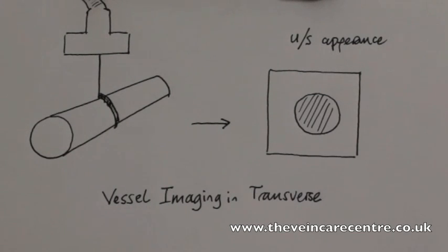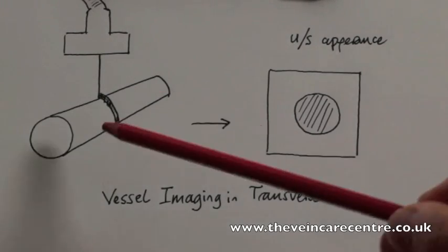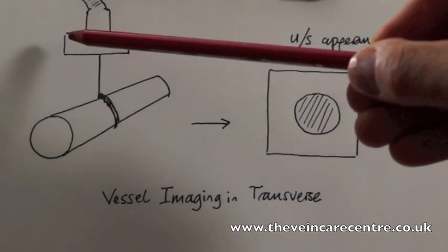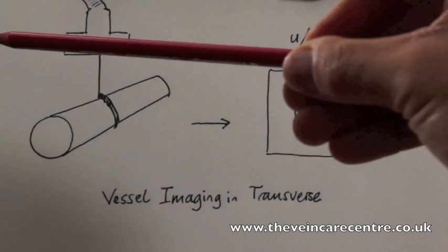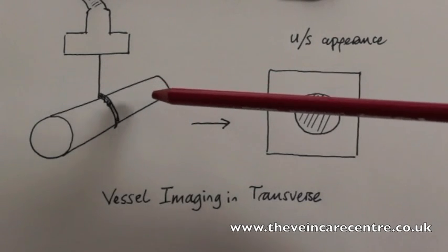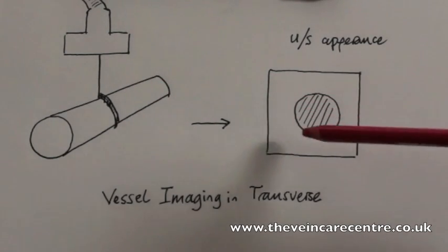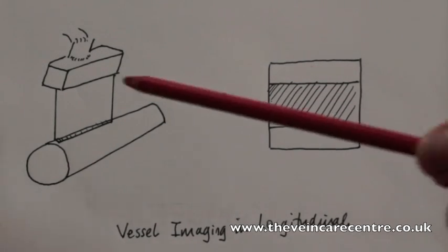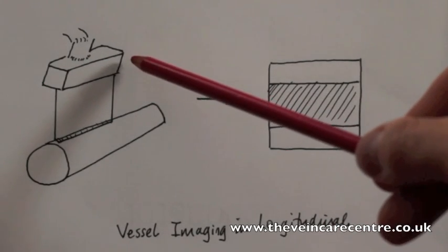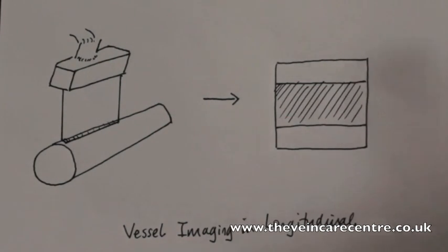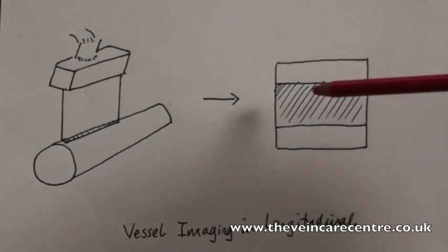This schematic shows the appearance of the vessel when it's imaged in transverse section. Here we can see the vessel running longitudinally, and the ultrasound probe is placed at 90 degrees to it, so the long axis of the transducer is at 90 degrees to the long axis of the blood vessel. The image produced is therefore a circle. When the blood vessel is imaged in longitudinal section, the long axis of the ultrasound probe is parallel and directly over the long axis of the blood vessel, and the ultrasound image looks like this.